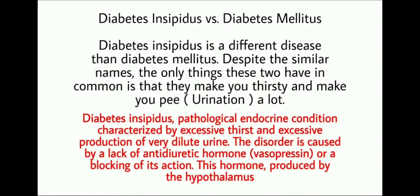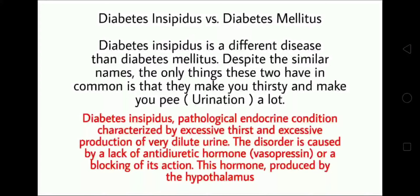Diabetes insipidus is a pathological endocrine condition characterized by excessive thirst and excessive production of very diluted urine. The disorder is caused by a lack of antidiuretic hormone, known as vasopressin, or blocking of its action. This hormone is produced by the hypothalamus.